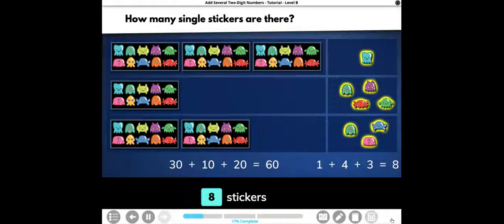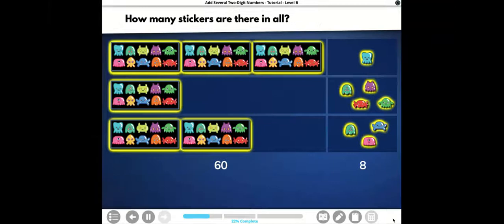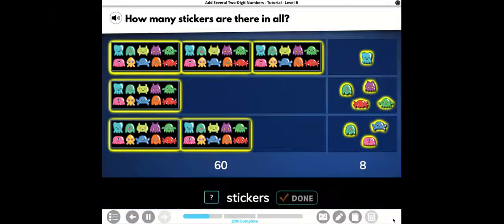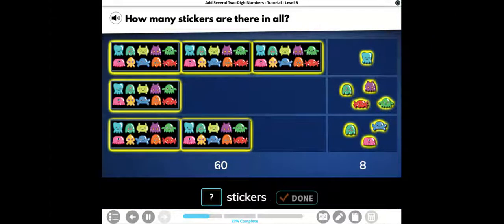Now we're ready to find how many stickers there are in all. How many stickers are there in all? Well, I have 60 here in my packs. I have eight here in my singles. So 60 plus eight is what, everybody? 68. Sweet. There are 68 stickers in all.